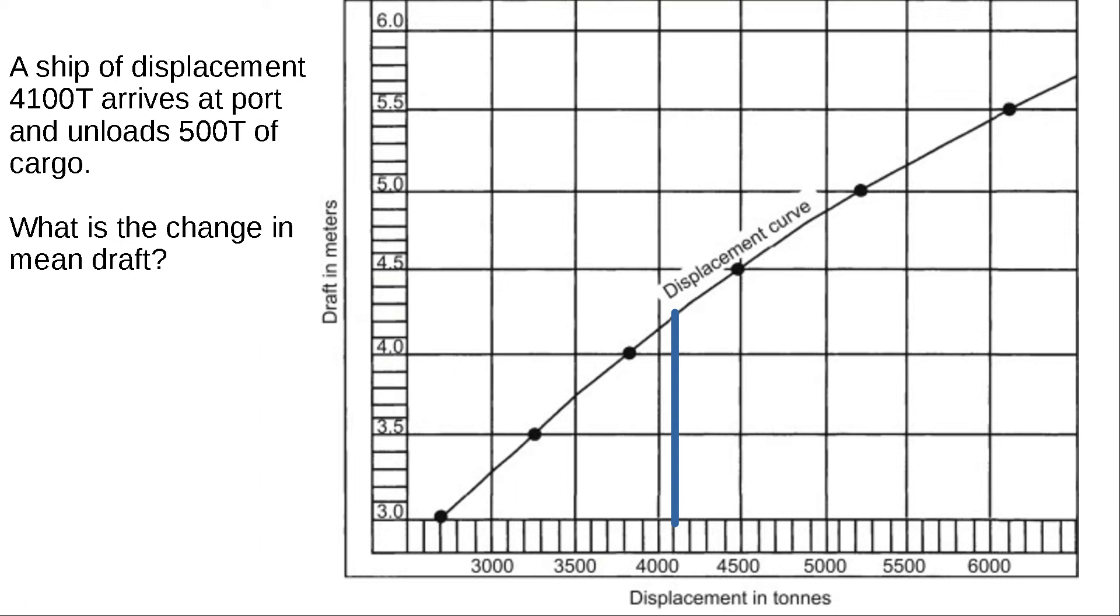Once again, using our draft displacement curves, have a look at 4,100 tons going in the vertical axis. That corresponds to a draft of approximately 4.25 meters.